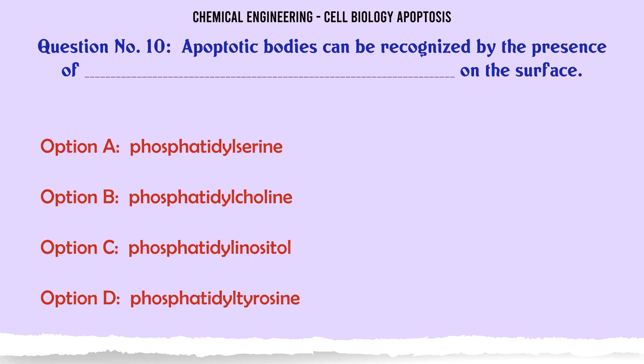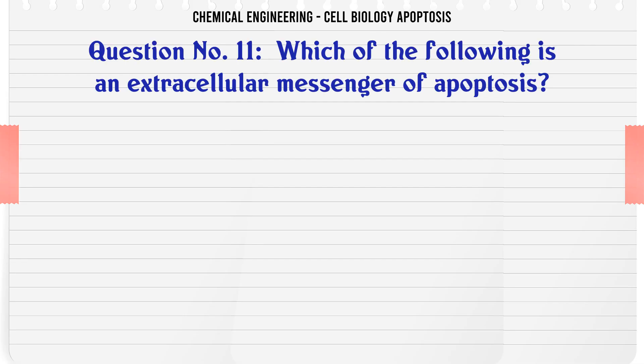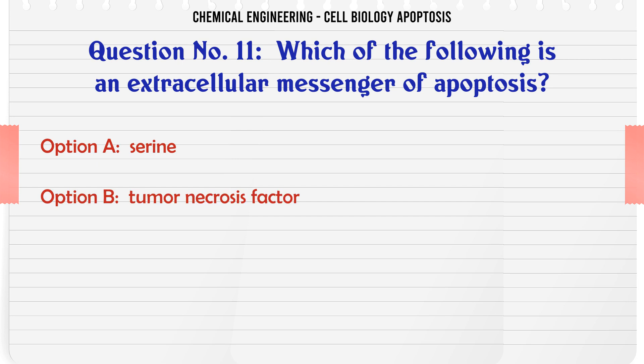Apoptotic bodies can be recognized by the presence of which molecule on the surface? A. Phosphatidylserine, B. Phosphatidylcholine, C. Phosphatidylinositol, D. Phosphatidylcholine. The correct answer is Phosphatidylserine.